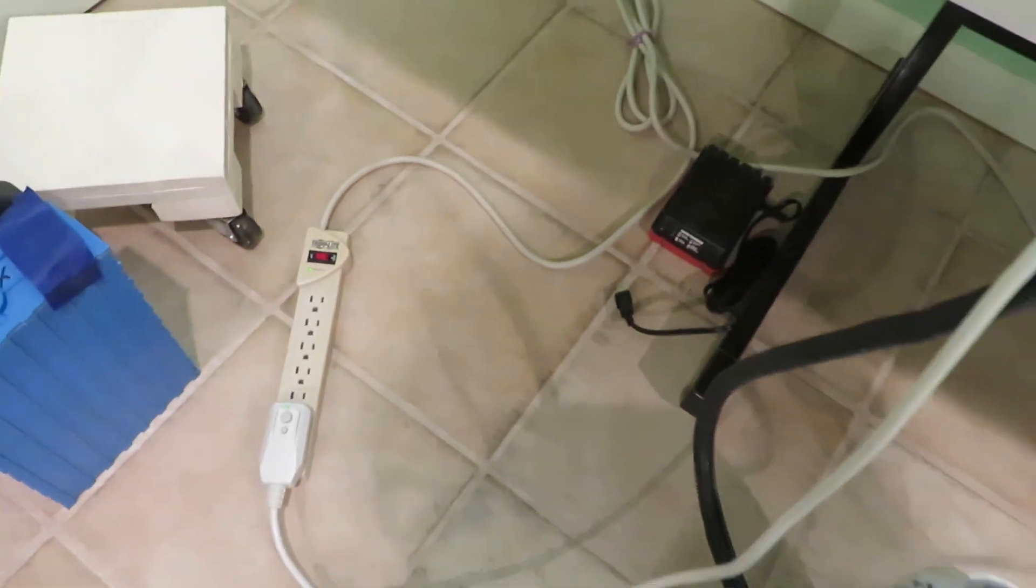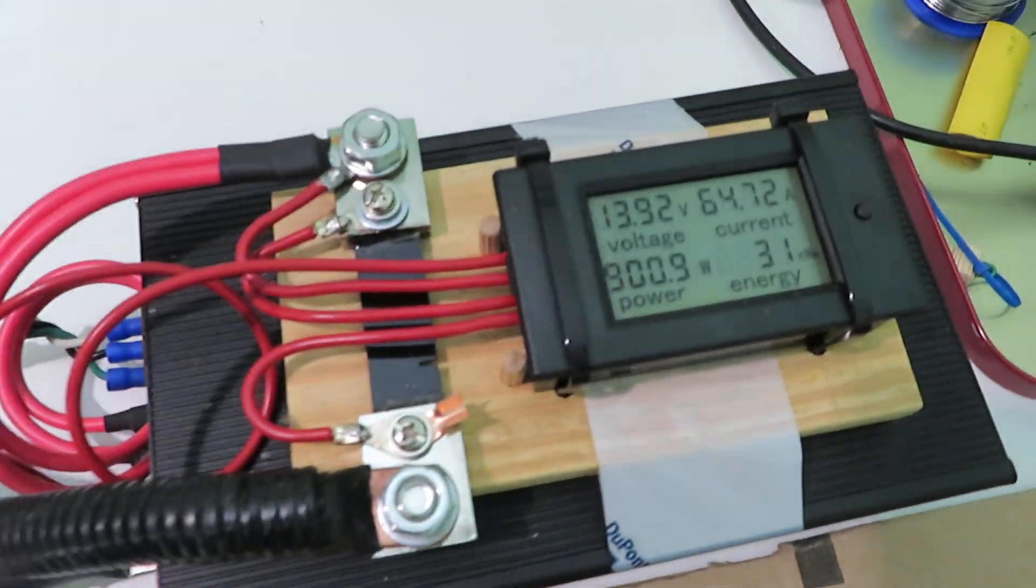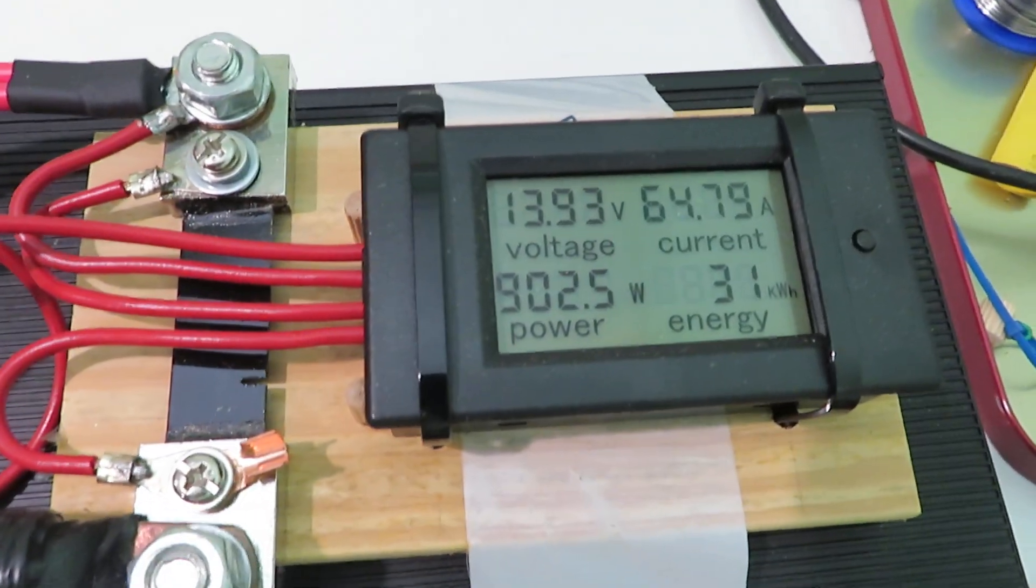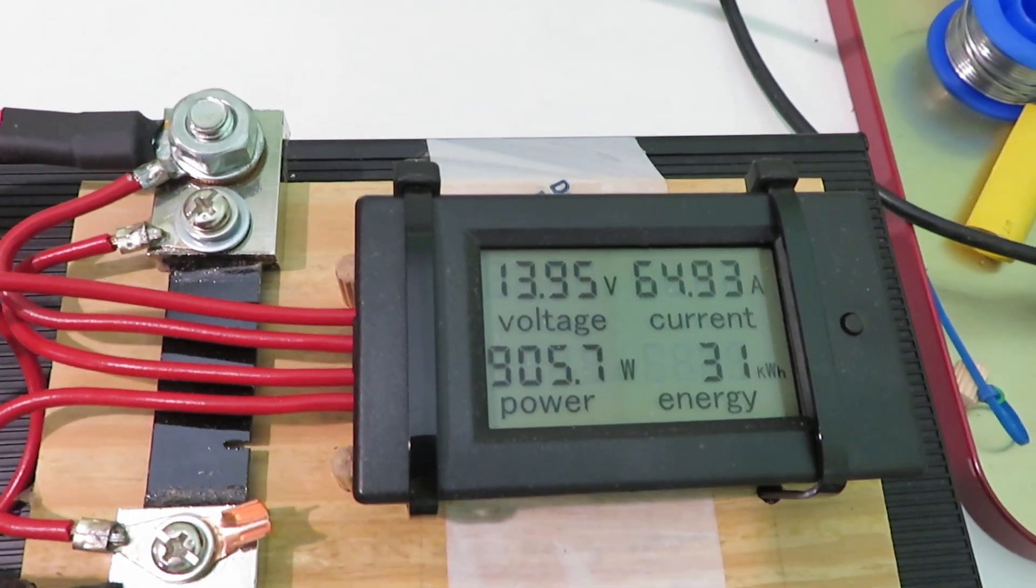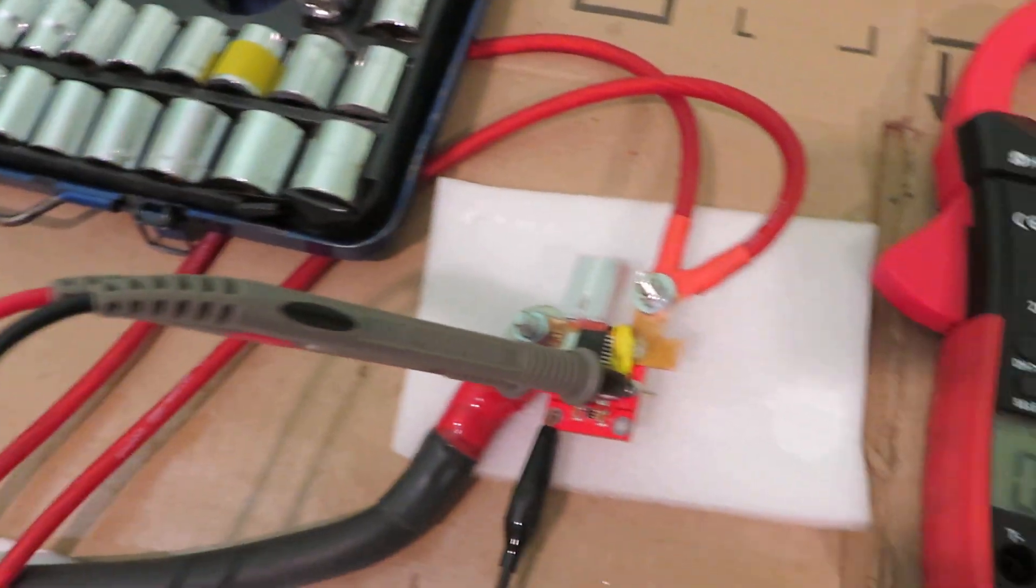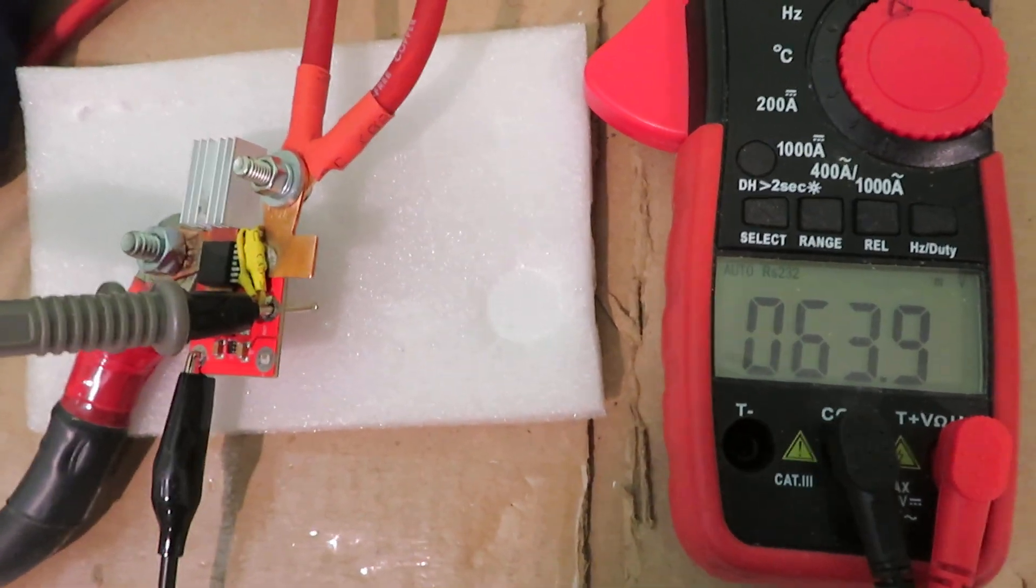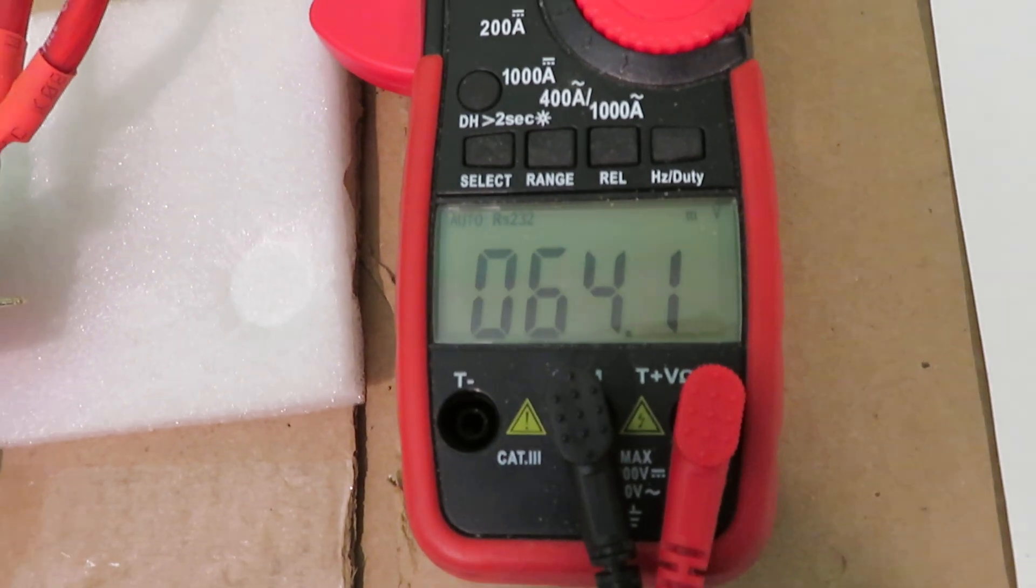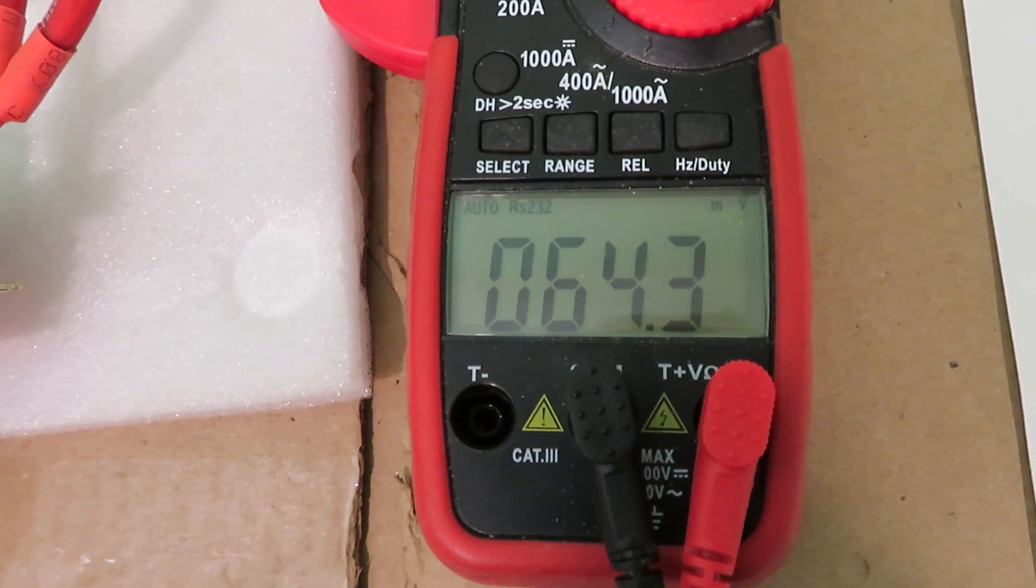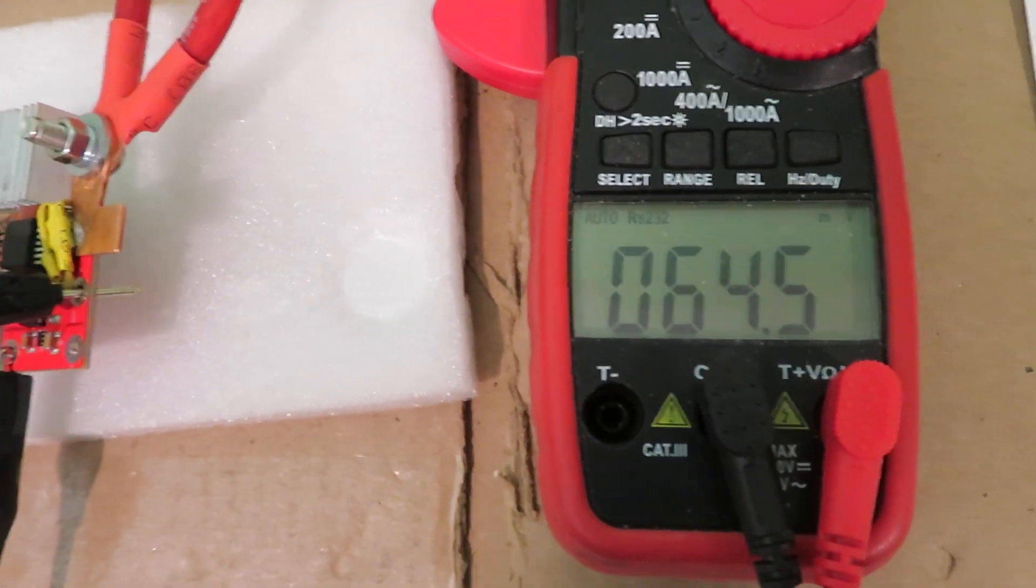The power supply is turned on and right now it's charging at 65 amps roughly, 13.96 volts. You can see the voltage drop of the ideal diode is 64 millivolts.